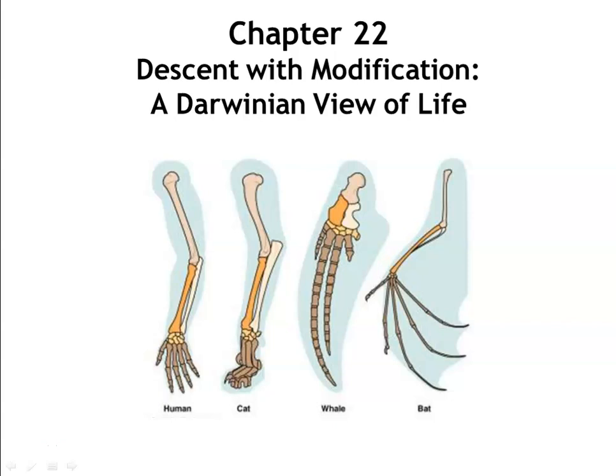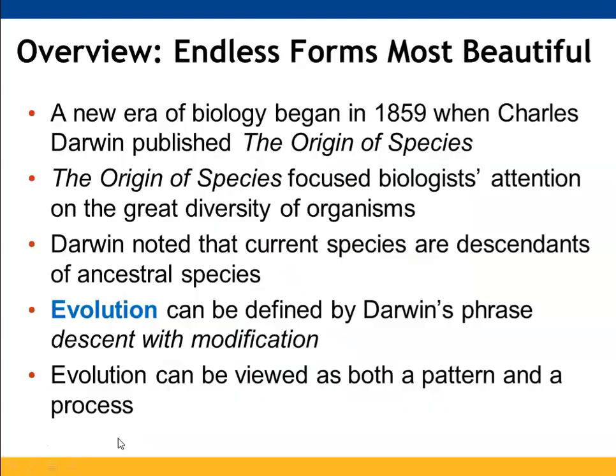Chapter 22 is about evolution and Darwin's role in describing the theory of evolution, known as descent with modification. The new era of biology is thought to have begun when Darwin published his theories on evolution in The Origin of Species, which examined the diversity of organisms and his belief that they were descendants of ancestral species. Evolution can be defined, according to Darwin, as descent with modification — we can look at it both as a pattern as well as a process.